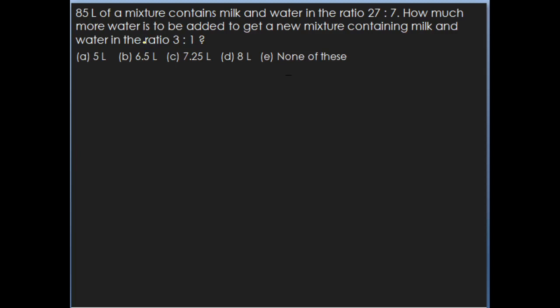The next question: 85 liters of a mixture contains milk and water in the ratio 27 is to 7. How much more water is to be added to get a new mixture containing milk and water in the ratio 3 is to 1? Milk and water are initially in the ratio 27 is to 7. You are adding water so the new ratio is 3 is to 1.